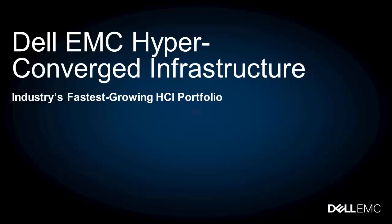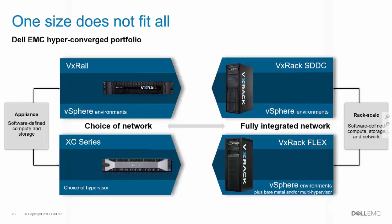Now that we've set the context and given an overview of the trends in the market and drivers behind adoption, let's very quickly give a summary overview of what's in the HCI portfolio from Dell EMC today. This summary slide encapsulates the primary offers within Dell EMC's HCI portfolio. It's broken into two segments: the first are what we call hyper-converged appliances — the VxRail and the XC series on the left. On the right are what are considered HCI rack-scale solutions.